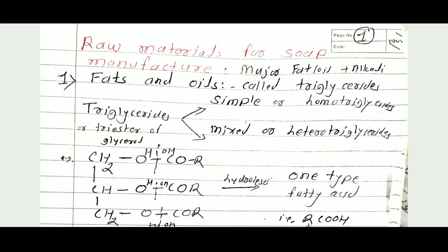Fats and oils are triglycerides, or triesters of glycerol. Glycerol contains three hydroxy groups, and this glycerol reacts with fatty acid to form a triester of glycerol. This triester of glycerol is also called a triglyceride. This triglyceride is classified into two types: one is the simple or homo triglyceride, and another is the mixed or hetero triglyceride.